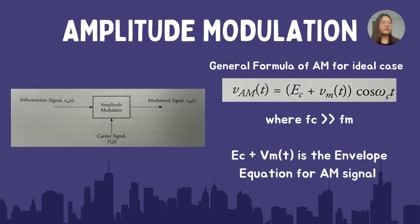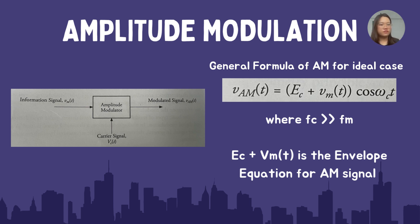From the diagram, we can notice that information signals go through the amplitude modulator with the carrier signal, and we will produce a signal called the modulated signal, which is V(t). And please note that a very important note is: the frequency of the carrier signal must be larger than the frequency of the message signal.